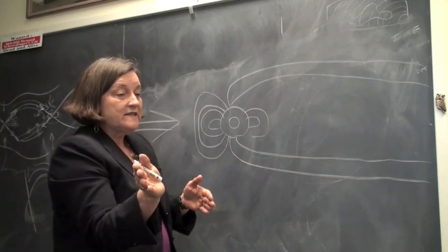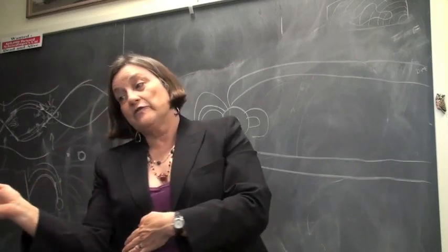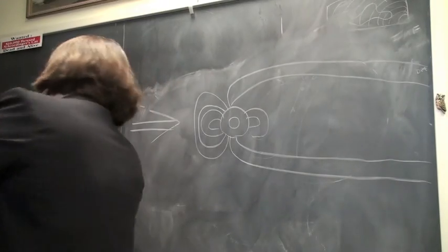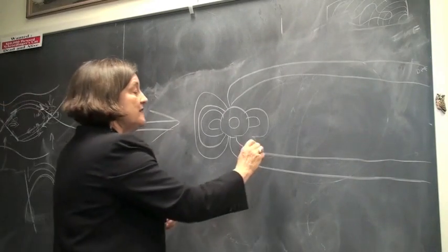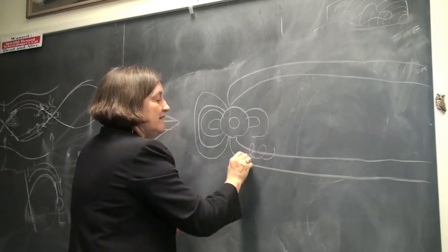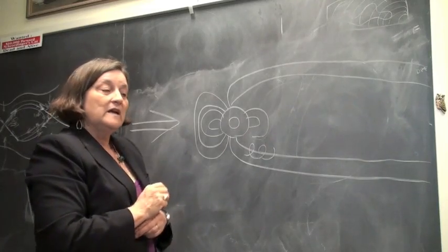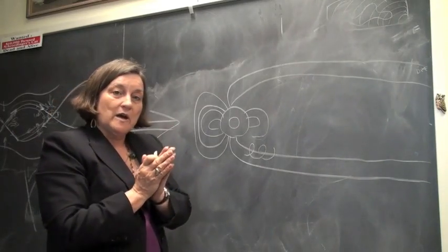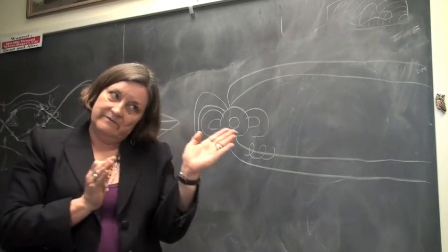So a particle of one size does turn right, turn right, turn right, and ends up cycling around the magnetic field. A particle with the other charge turns left repeatedly and also ends up cycling around the magnetic field, but in the opposite direction.